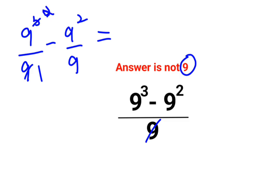1. Sorry, reduced to 2. Here also reduced to 1. So we are left with what? 9 square minus 1. Sorry, minus 9.